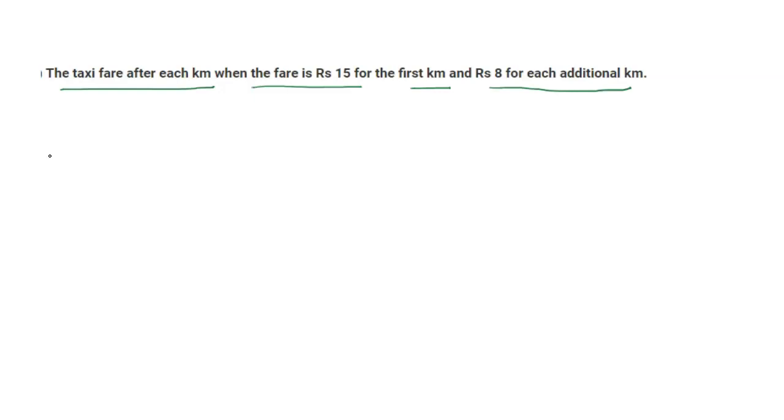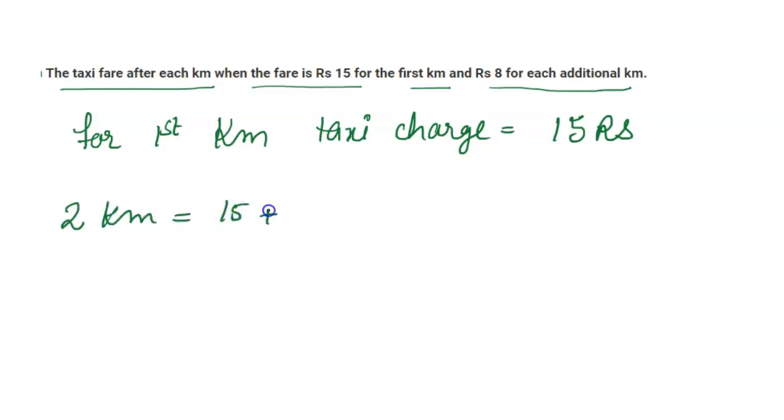For the first kilometer the taxi driver charges rupees 15. We will write: for first kilometer, taxi charge equals 15 rupees. For additional kilometers, like when 2 kilometers, it will be charged 15 plus 8 equals 23 rupees. For the third kilometer, again charge 8 rupees, so it will be 31 rupees.